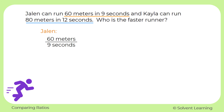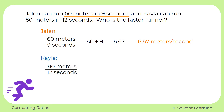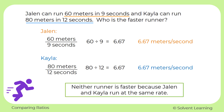We can convert this to a unit rate using division. 60 divided by nine gives us 6.67 when we round it off. So Jalen runs 6.67 meters per second. For Kayla we have 80 meters over 12 seconds. 80 divided by 12 equals 6.67, so Kayla also runs at 6.67 meters per second. We have the same speed for both runners, so neither runner is faster — Jalen and Kayla run at the same rate.